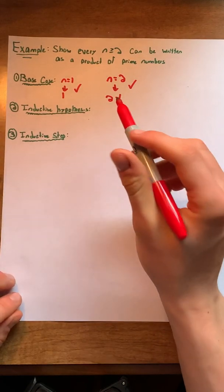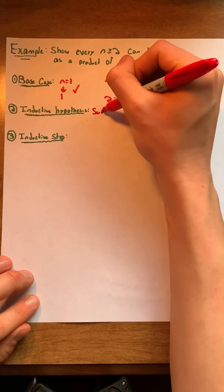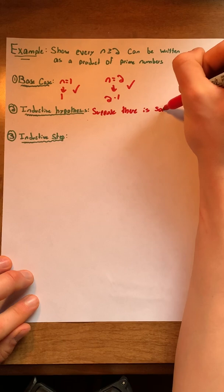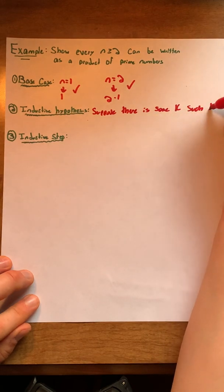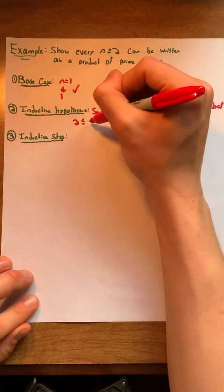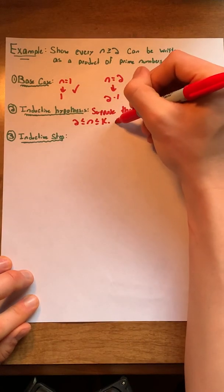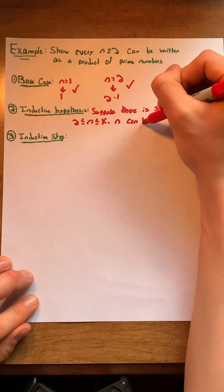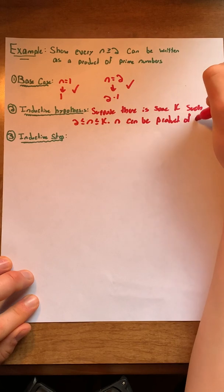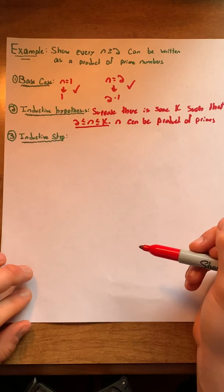Next, we want to create an inductive hypothesis for some range of values. We will suppose there is some k such that 2 ≤ n ≤ k, which means that n can be written as a product of primes. Note again that we created a range of values here.